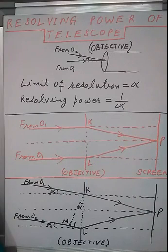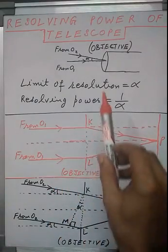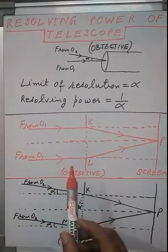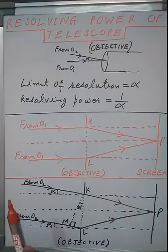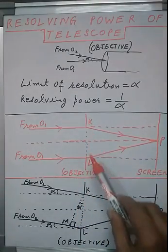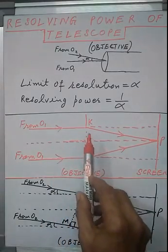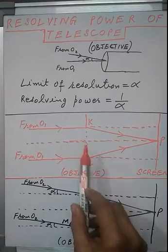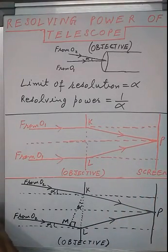Now let us derive the formula for resolving power of telescope. Suppose the parallel rays of light from object O1, lying at infinity, are incident on the objective of the telescope. KL represents the diameter of the objective of the telescope. After diffraction from the edges of the objective, these rays of light will meet at point P on the screen.